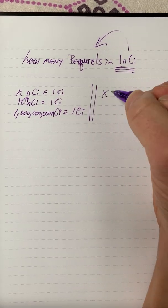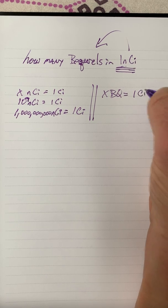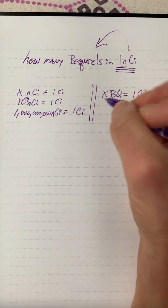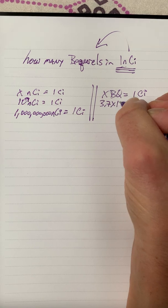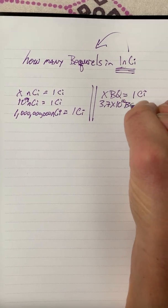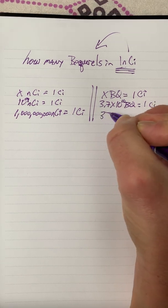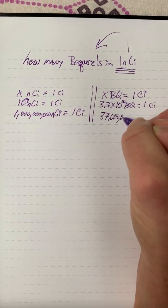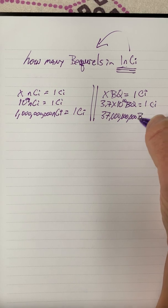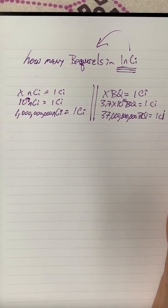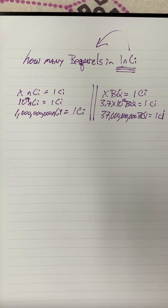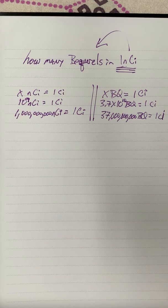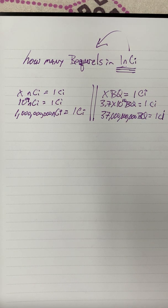The other conversion factor we need is how many becquerels are in one curie. The answer is 3.7 times 10 to the 10th becquerels — 37 billion becquerels — in one curie. Both curie and becquerel are measures of radioactivity; the becquerel is one decay event per second, which makes it a very small unit.